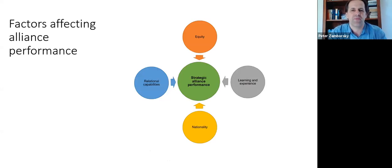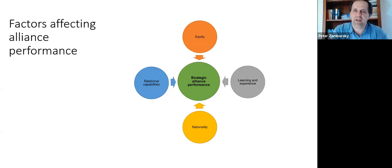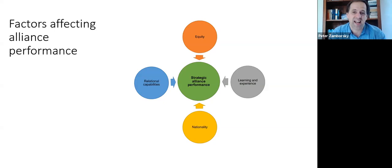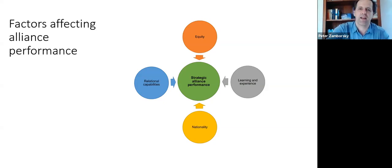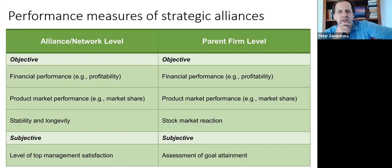Successful partnership ultimately leads to good performance. A number of issues affect this: how equitable the split between alliance partners is, nationality and potential cultural clashes, relational capabilities in handling differences and problems, how much you learn and how you manage the learning process. Prior experience also matters — companies with extensive previous alliance experience are better at managing future alliances.